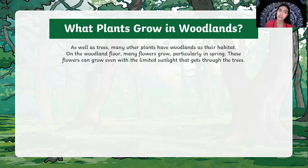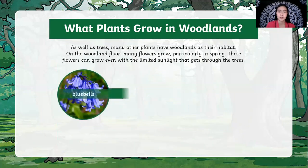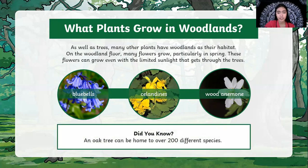What plants grow in woodlands? As well as trees, many other plants grow in woodlands as their habitat. On a woodland floor, many flowers grow, particularly in spring. These flowers can grow even with limited sunlight that gets through the trees. Some plants that grow on woodlands include bluebells and celandines — they only need little sunlight. Did you know that a single oak tree can be home to over 200 different species?